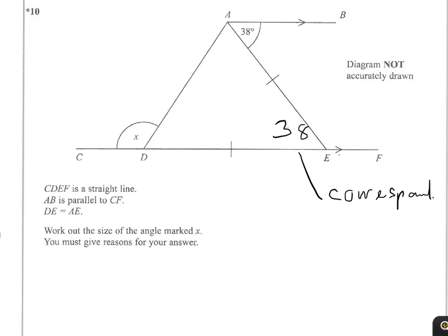Next, because we have the isosceles triangle, we know that these two angles are the same. So I subtract 38 from 180, which is 142, and half it. That gives me 71. I'll note that these are equal because the triangle is isosceles.